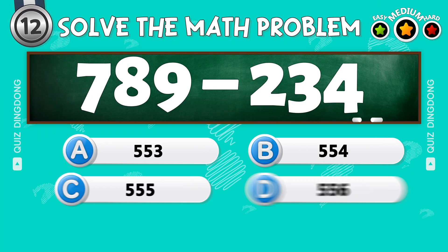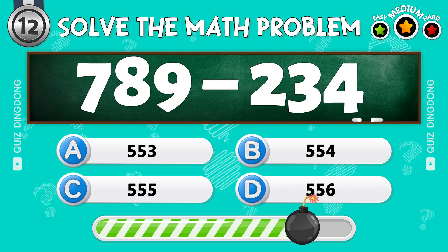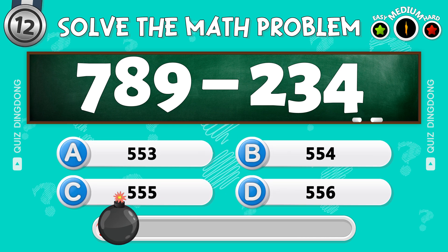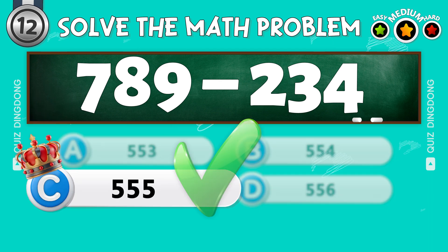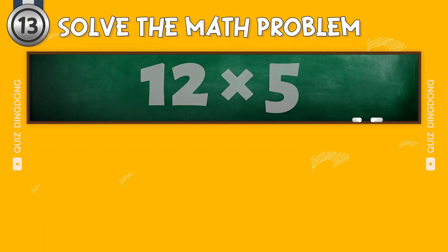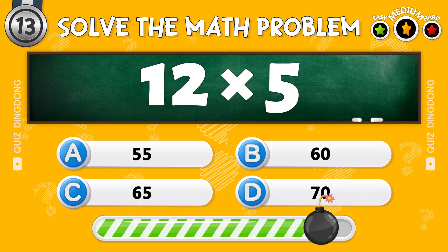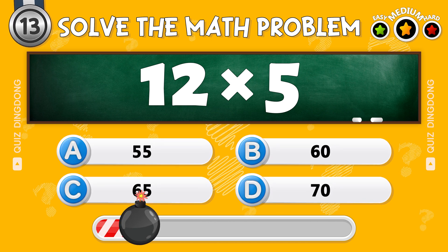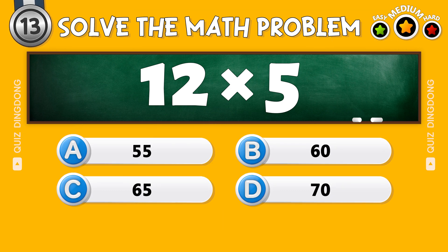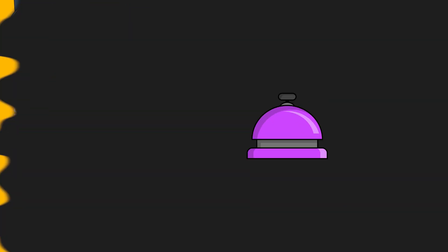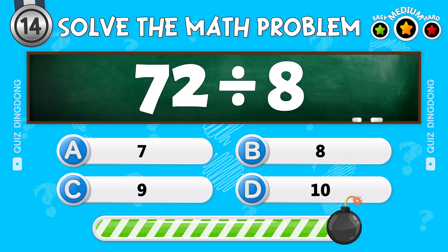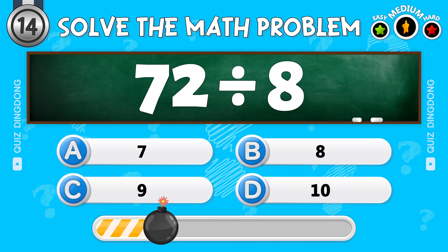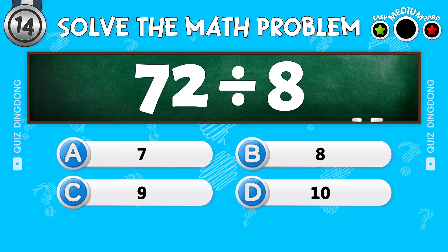What is 789 minus 234? What is 12 times 5? Great job, the answer is 60. What is 72 divided by 8? Good, the answer is 9.